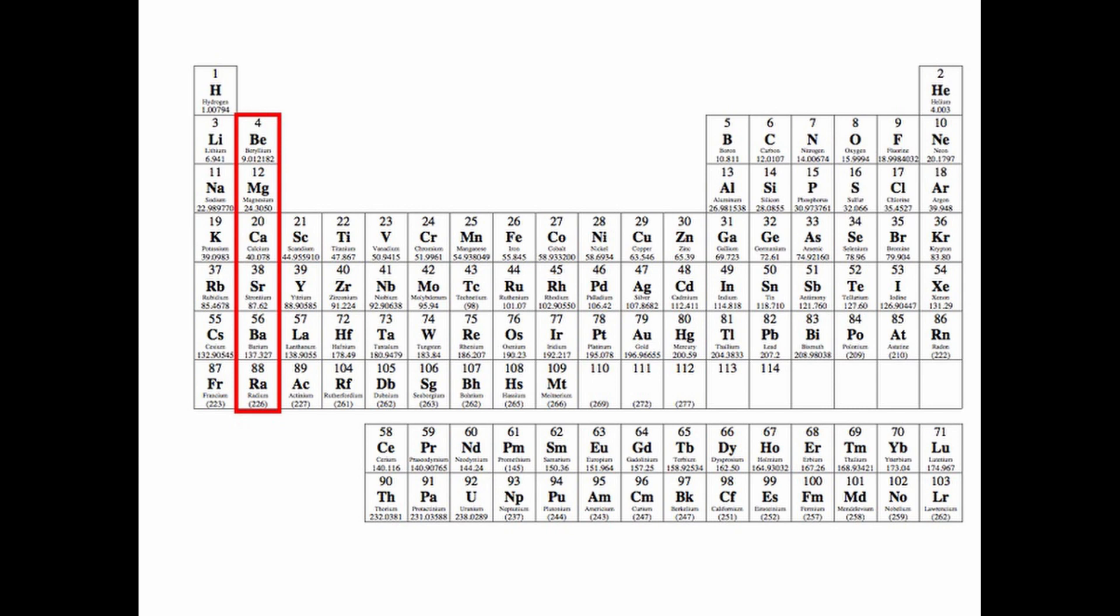Moving on to the start of group two. Alkaline earth metals, what we will do. Similar to the first group, just not as extreme. Electrons they lose. Basically, alkali just down one step. Instead of one, two electrons are swept.